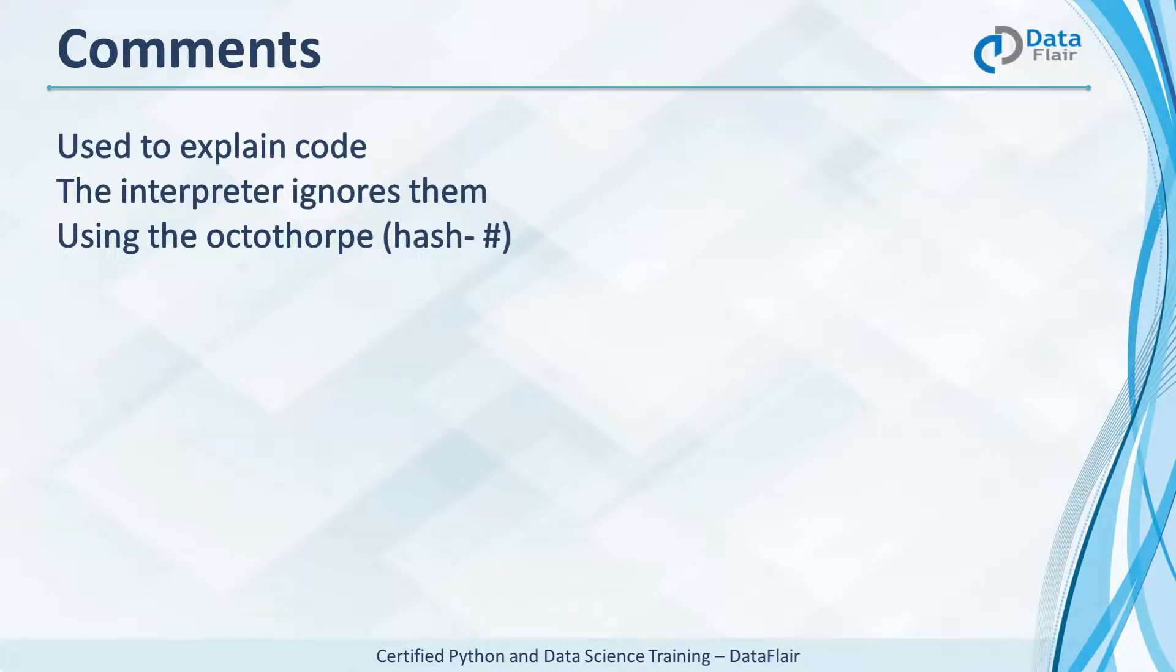Comments in a programming language help explain code. They are not executed. The interpreter ignores them. Use a hash sign or an octothorpe to declare a comment. If your code is properly commented, it will be easy on the next person who reads your code. And that may even be you.